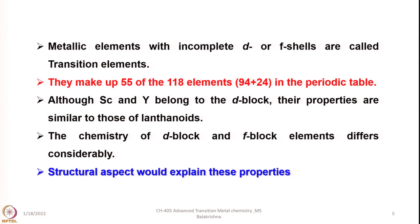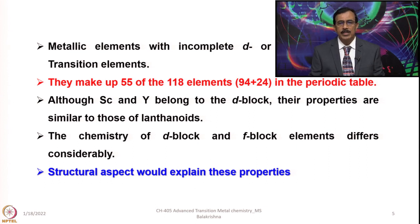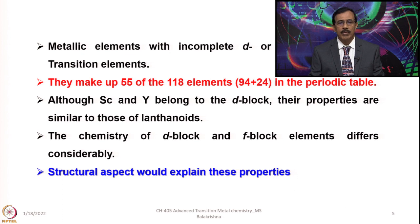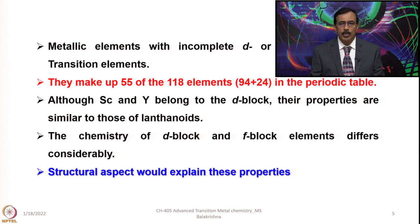Transition elements make up 55 of the 118 elements. We have 94 natural elements and 24 man-made elements, out of which the 3D, 4D, and 5D series have 9 elements each — giving 27 — and the 4F and 5F series have about 28 elements, together making 55 transition elements. Although scandium and yttrium belong to the D block, their properties are similar to those of the lanthanides. The chemistry of D block and F block elements differs considerably, and structural aspects should explain these properties clearly.